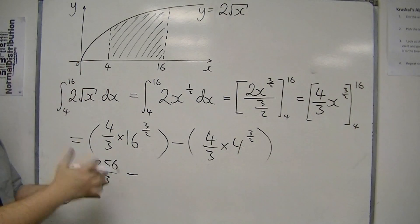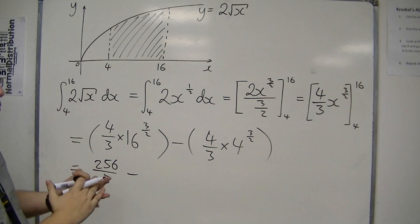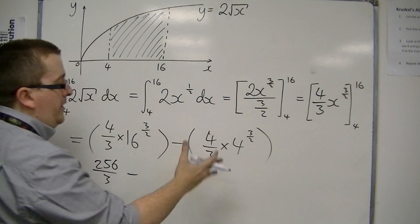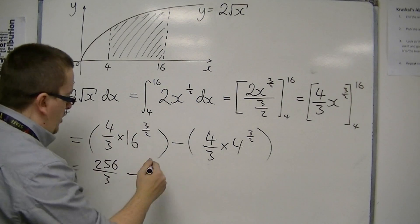Well, square root is 2, so that's 8. And then 4 thirds times 8 is 32 over 3.